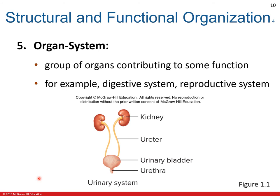Because the organ systems are so interrelated, dysfunction in one organ system can have profound effects on other systems. For example, a heart attack can result in inadequate circulation of blood. Consequently, organs of other systems, such as the brain and kidneys, can malfunction.